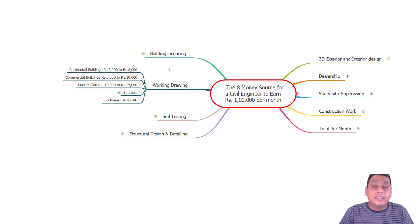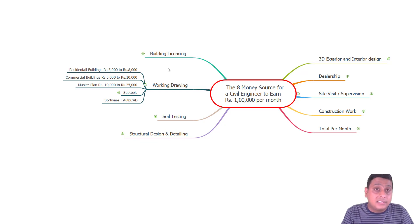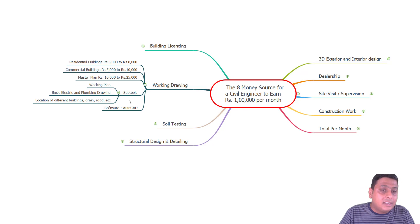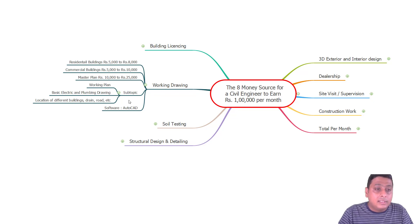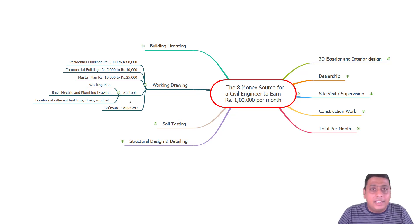For a residential building, we charge between 5000 to 8000 rupees; for a commercial building, 5000 to 10,000 rupees. For a master plan — for example, if a person has one acre of land and wants to develop a resort or homestay — there are many components: villas, kitchen, dining, store, kids' play area, roads, access roads, powerhouse, underground drainage. In that case we charge anywhere in the range of 20,000 to 25,000 rupees, providing working plans, basic electrical and plumbing drawings, and location layouts.